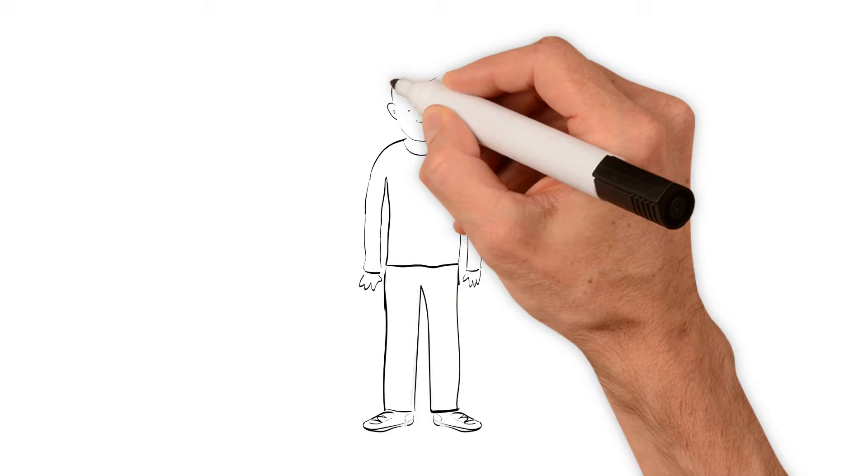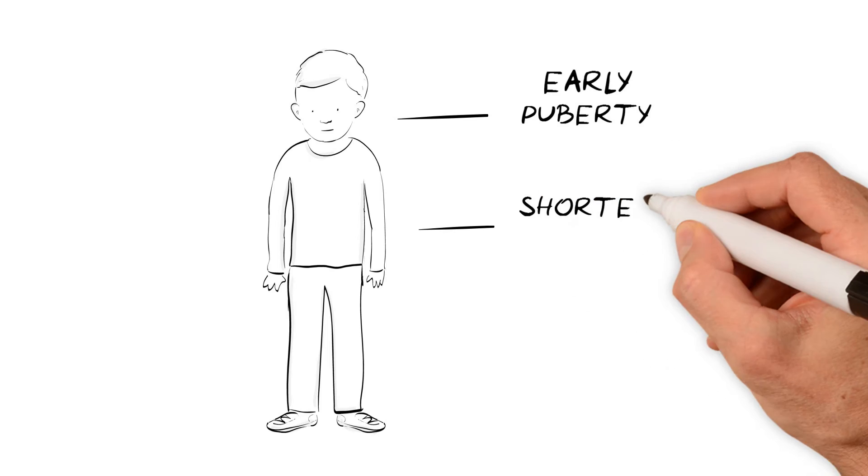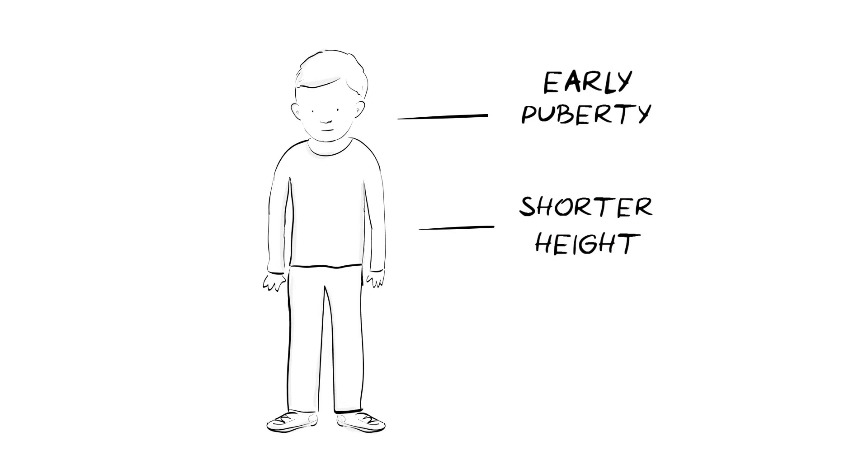Puberty may begin slightly earlier than normal, which can result in a shorter final adult height. These, and other less common features, are quite variable. Not all children will have every feature, and the severity of problems varies widely.